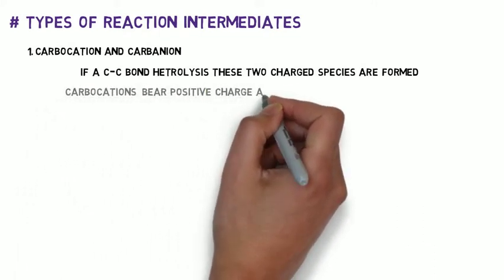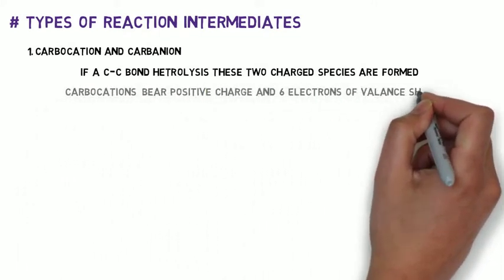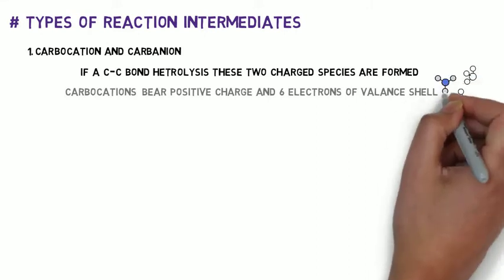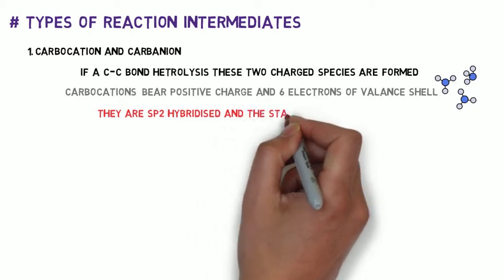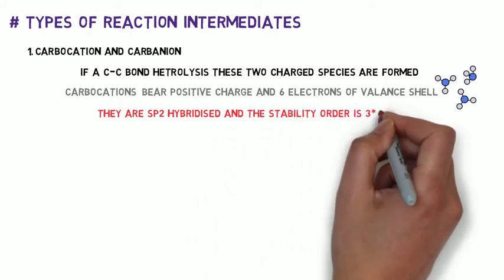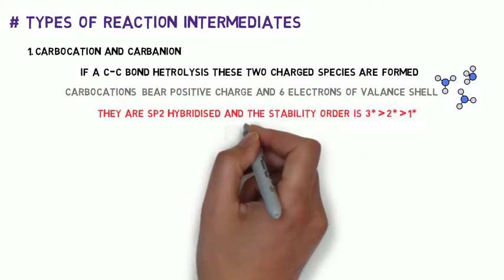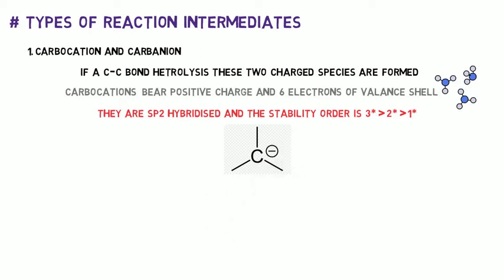The carbocation bears positive charge and 6 electrons in its valence shell. They are sp2 hybridized and the stability order is tertiary greater than secondary greater than primary.